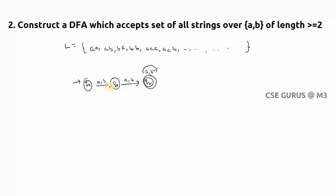It is accepting 'aa', 'ba', 'b' — yes. Triple 'a': starting from q0, q0 on a goes to q1, q1 on a goes to q2, q2 on a self-loops back to q2 — accepted. You can check 'aab', 'abb', 'abab', and any string of length ≥ 2. For example 'abbab' — length five: q0 → a → q1 → b → q2 → b → q2 → a → q2 → b → q2, final state — accepted.